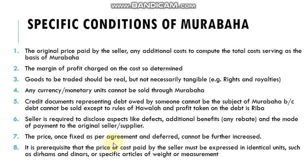Because the owned amount would increase again in the shape of Riba, this is not allowed. Number eight: it is a prerequisite that the price or cost paid by the seller must be expressed in identical units, such as dirhams and dinars, or specific articles of weight or measurement. Units may vary in weight, shape, mode, color, and design, and may also vary in cost and price.